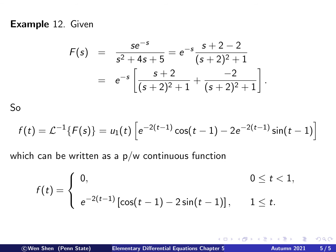We can rewrite this as a piecewise continuous function using the fact that u₁(t) is a unit step function at 1. For t less than 1, it is just 0. For t greater than 1, we replace u₁(t) with 1 and get the expression, taking out the exponential as a common factor and collecting the sine and cosine terms together.